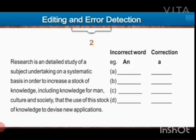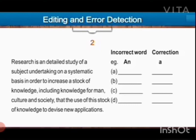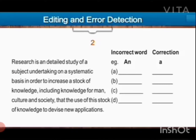Before going for correction, first completely read the passage. Understand it — whether it is in past or present. Then check singular or plural — all these things should be seen before you start correcting. So where you will read the passage, when you find a correction, just put a circle over there so that you can identify it next time when you are reading the lines. So you have to go for a detailed reading, line by line, very carefully, so that you will find the error.